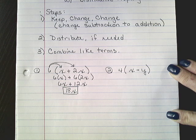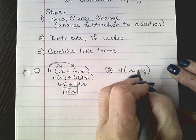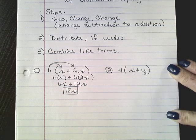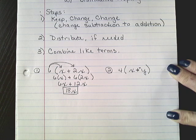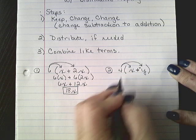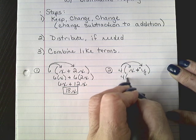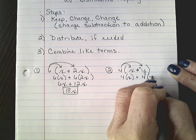We want to eliminate that subtraction and make it into an addition problem. Keep x, change subtraction to addition, and change positive y to a negative y. Now I can go ahead and distribute that for 4 times x plus 4 times negative y.